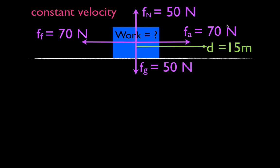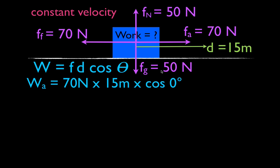The forces are 70 and 70 opposing horizontally, and 50 up and 50 down — the net force is zero. For the applied force: 70 times 15, and since the force and displacement are parallel and in the same direction, theta is zero degrees, cosine of zero is plus one. So it's 70 times 15 times plus one, giving plus 1,050 joules. The applied force is doing 1,050 joules of work.